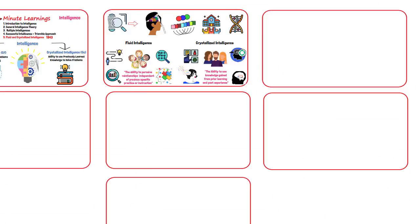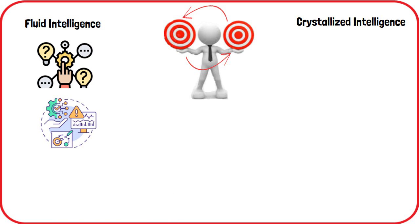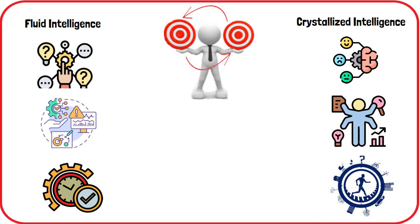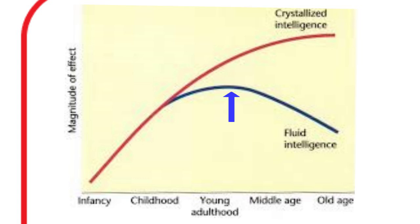Fluid and crystallized intelligence serve different purposes but are interrelated. Fluid intelligence involves the ability to reason and handle complex information in real time, while crystallized intelligence involves knowledge and skills acquired over time. Both are aspects of what Spearman referred to as general intelligence, or the G-factor. Fluid intelligence peaks in early adulthood but may reach its apex as late as age 40. Crystallized intelligence, on the other hand, typically peaks around age 60 or 70. Fluid intelligence tends to decline gradually after its peak, whereas crystallized intelligence continues to grow through adulthood.